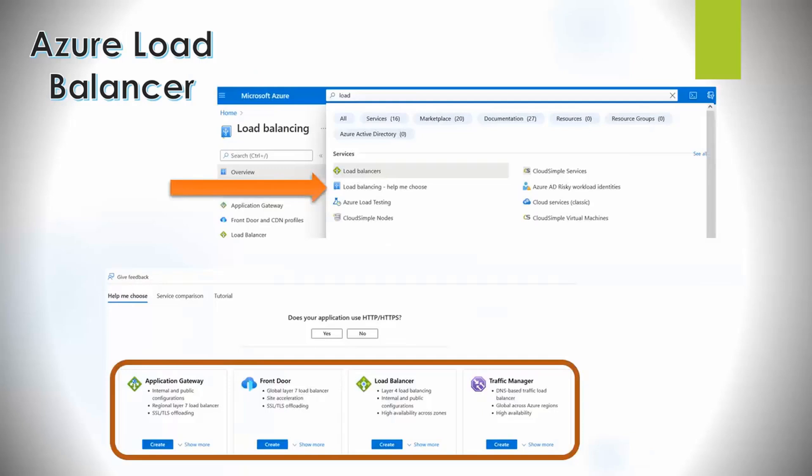From the Azure web GUI interface, it can help you choose the correct load balancing solution for you. By choosing the second option below, 'Load Balancing - Help Me Choose,' it will ask you a series of questions like if you're using HTTPS or not, and if you need to load balance across regions, and other questions before it helps you choose the correct load balancing solution for you.